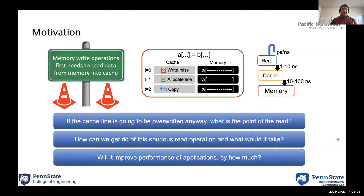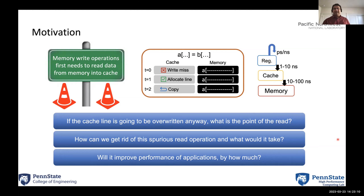The question is: how can we get rid of this spurious read operation? What would it take? How would you alter the applications? And will it improve the performance of applications, and if so, by how much?